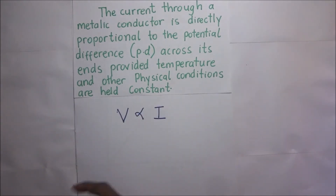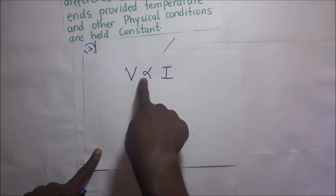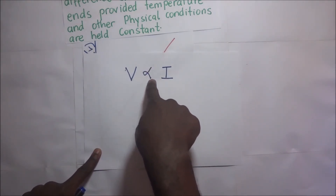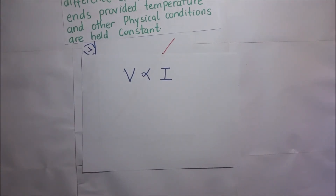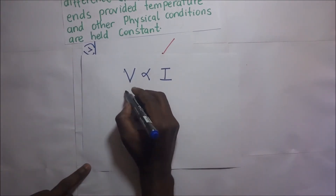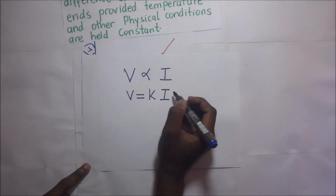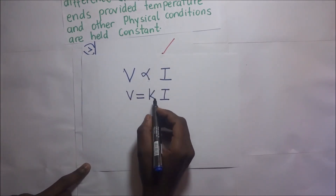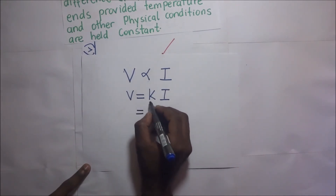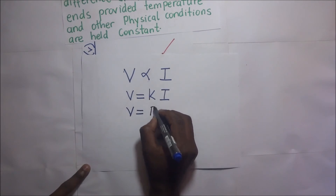So V is directly proportional to I, or the current flowing through a conductor is directly proportional to the potential difference across the ends of that conductor. If we are to remove the proportionality sign, we introduce a constant of proportionality, making it V equals K times I. That constant of proportionality happens to be the resistance of that conductor, so V equals R times I.